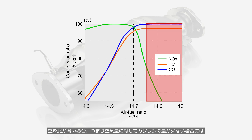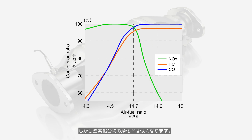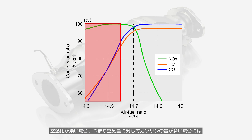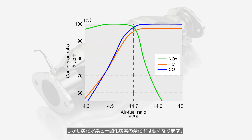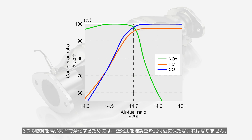When the air-fuel ratio is lean, meaning the amount of gasoline is low relative to the amount of air, hydrocarbons and carbon monoxide are converted at a high rate. However, the conversion rate of nitrogen compounds is low. When the air-fuel ratio is rich, meaning there is more gasoline relative to the amount of air, nitrogen compounds are converted at a high rate. However, the conversion rates of hydrocarbons and carbon monoxide are low. To convert all three substances with high efficiency, the air-fuel ratio must be maintained near the stoichiometric ratio.